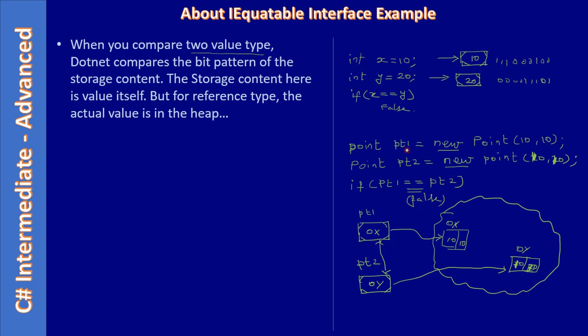Since pt1 and pt2 hold addresses and those addresses are different, this will return false. So that's how the equality operator won't work for reference types, but it works well for value types.